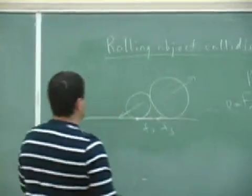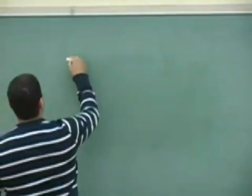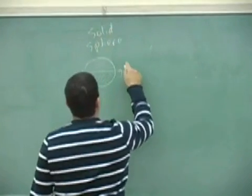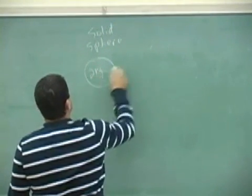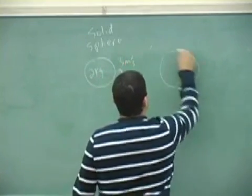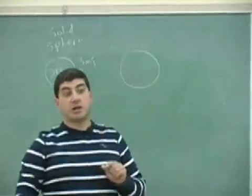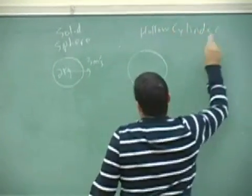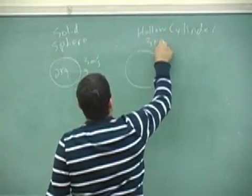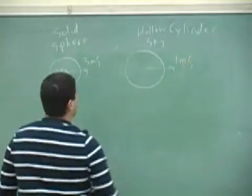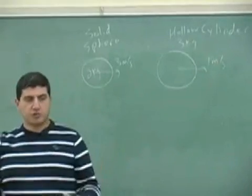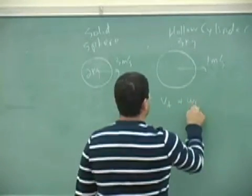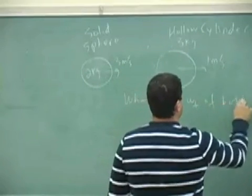So the way you do that is, let's give it some numbers here. Let's say you have a sphere, a solid sphere, rolling forward at a velocity of, let's say it's two kilograms, three meters per second. And then let's say this one is kind of like the demonstration I did. Let's say it's a hollow cylinder. Let's say it's three kilogram and it's moving forward at one meter per second. So I can ask the question, what is the final velocity of both after the collision?